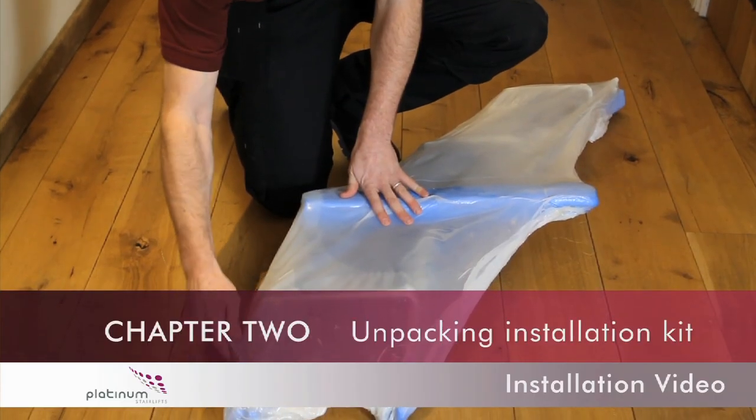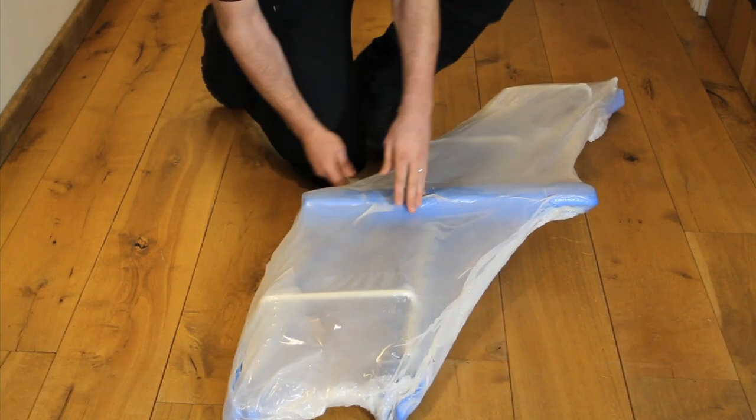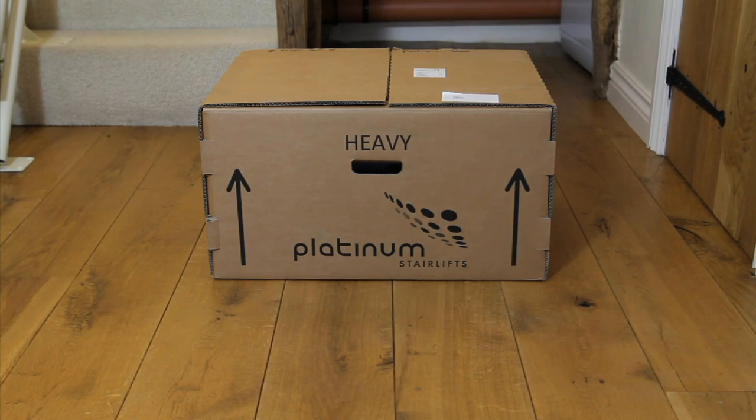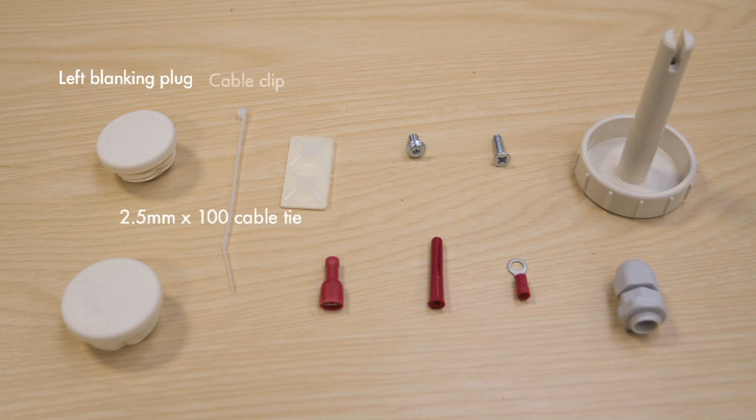Chapter 2: Unpacking of the Rails and Installation Kit. Before you start installing the stairlift, remove all of the contents from the installation kit and check everything against the drawing and the kit inventory.